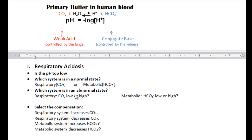Well, respiratory is abnormal, so that means the respiratory system is causing the acidic environment. The system that is in the normal state is the metabolic system. The bicarb is normal.